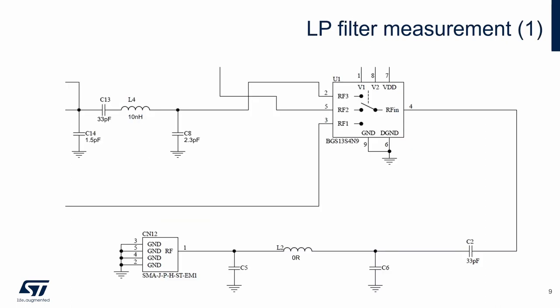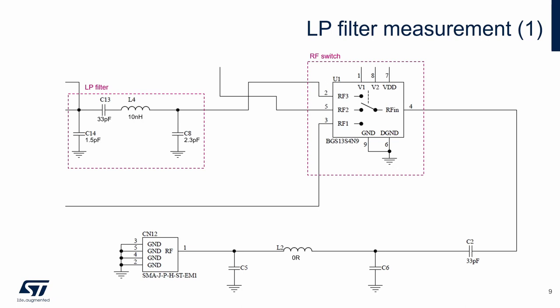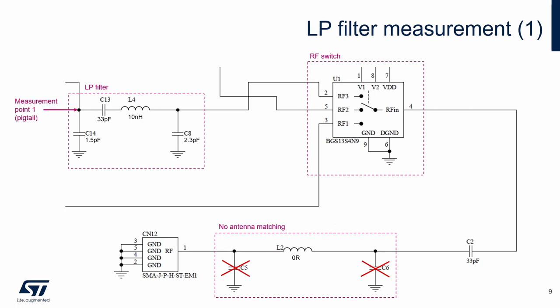Here is the low-pass filter measurement shown in the schematic. We can see the low-pass filter circuit, the RF switch, and the antenna matching network. The antenna matching network is not used — the serial component is a 0 ohm resistor and the parallel capacitors are not populated. One measurement point is at this point through the pigtail, and the second measurement point is on the SMA connector. The measured RF path looks like this.